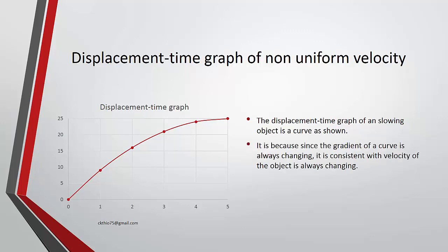Why is this? Because the gradient of a curve is always changing. Since velocity is the gradient of the displacement-time graph, the velocity is always changing too. In this case, the gradient becomes flatter and flatter, so the velocity is getting slower and slower.